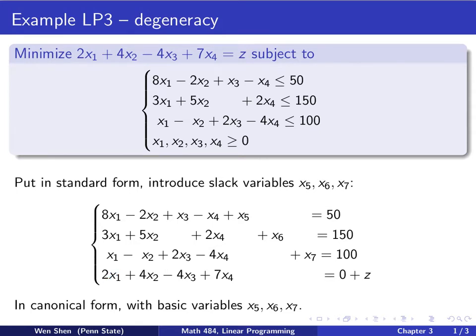Now we see the LP problem is in canonical form with the basic variables x5, x6, x7. The basic solution is feasible, all these numbers are positive, and the z is expressed in terms of the non-basic variables.